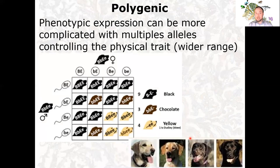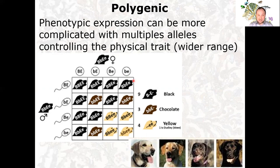Some traits are more complicated than simple dominant/recessive. Coat color in dogs is polygenic — more than one allele is involved, giving a wider range of results. You can get black labs, chocolate labs, or yellow labs from combinations of the male and female gametes' alleles. It's not always as simple as Mendelian genetics, but this is how we get all these different dogs.